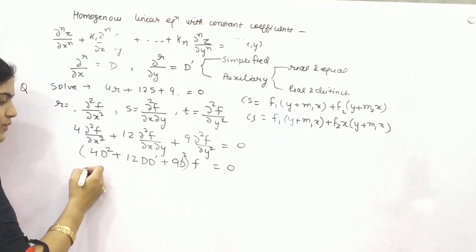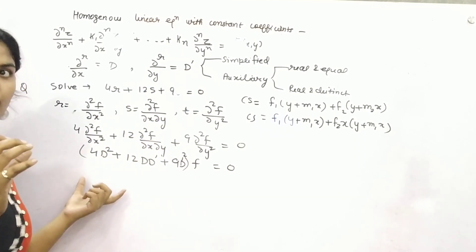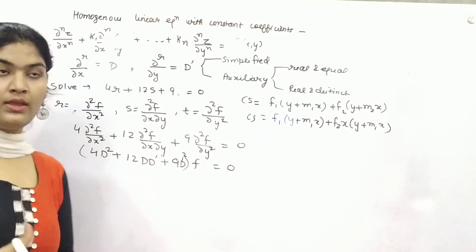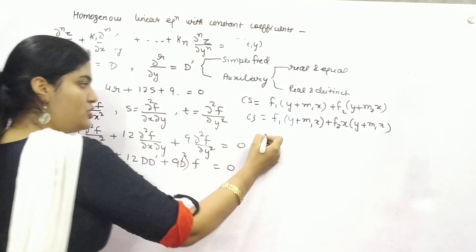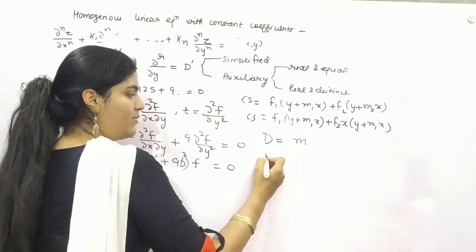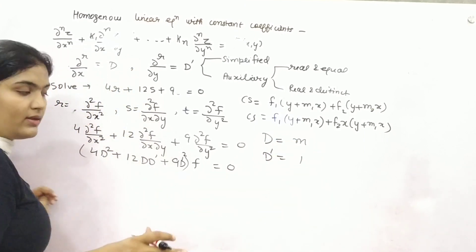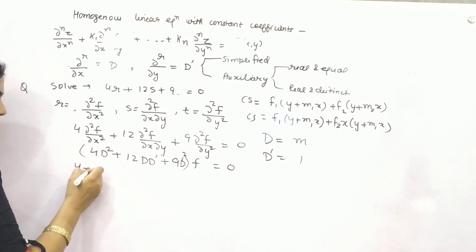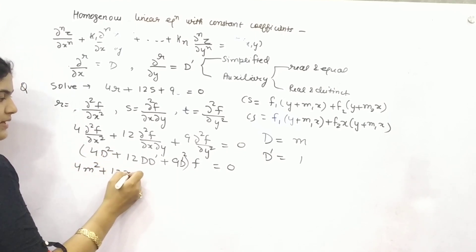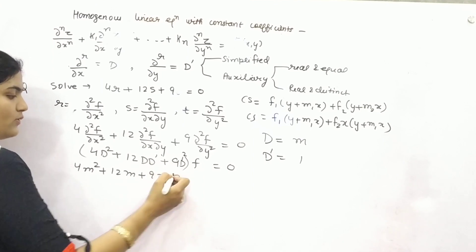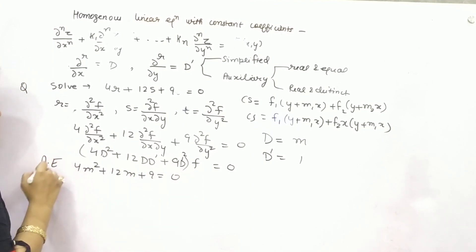Now, for auxiliary equation, you need to consider another variable, which will be m. Your d will represent m and d dash will have value of m equal to 1. So it is 4m square, 12m plus 9 equals 0. This is your auxiliary equation.